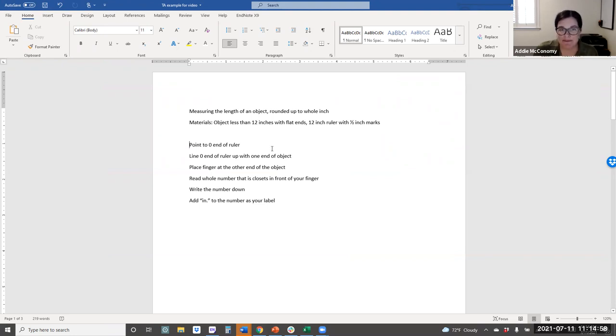So in interest of time, I went ahead and provided the steps that we're going to be using today. So our objective is to measure the length of an object rounded to the nearest whole inch. I've listed the materials here. We'll need a ruler and something that's less than 12 inches to measure. And then I've written out the six steps that would be required to complete this task.